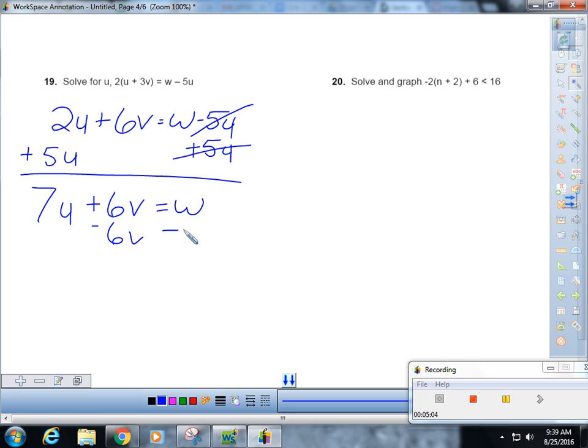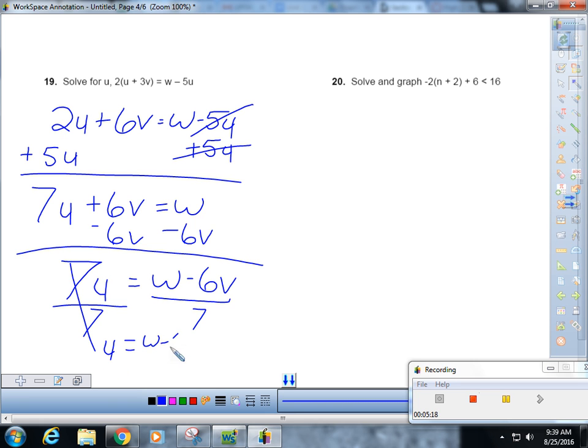Subtract 6v. 7u is w minus 6v divided by 7, and you get u is w minus 6v over 7. That was not easy.